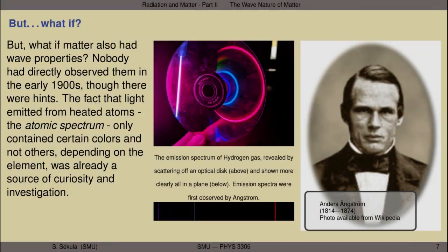But what's so special about electromagnetic radiation? Why does it get to have both particle-like and wave-like aspects? What if matter — electrons, protons, neutrons, whole atoms — could also exhibit wave-like behaviors? They had been experienced primarily as particulate objects with definite locations in space and time. But maybe nobody had observed the wave aspects of matter's behavior up to that point, such as in the early 1900s.